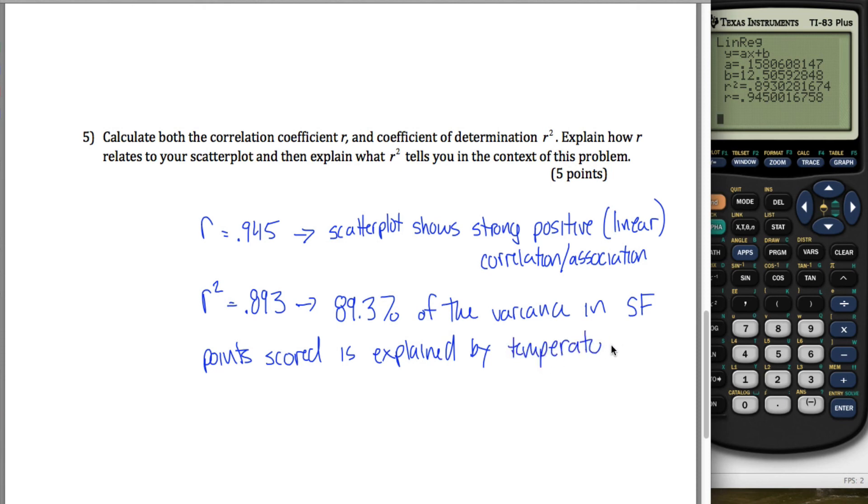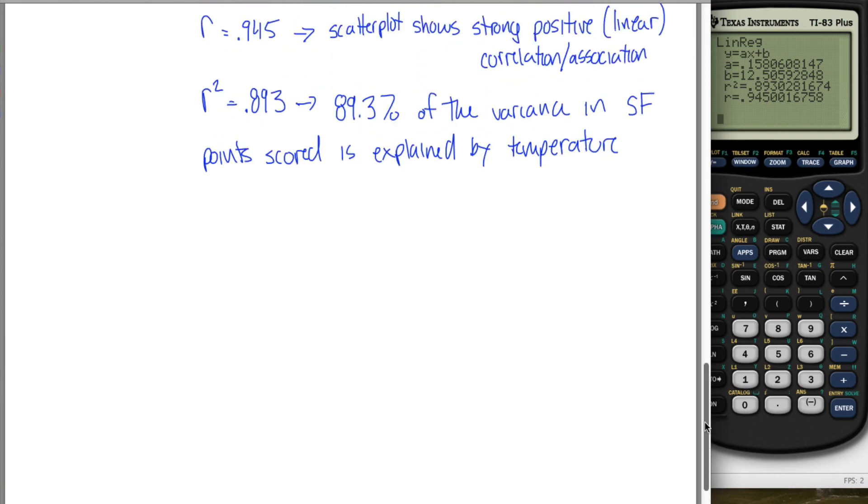There's a lot of different things, a lot of different factors that will determine how many points the 49ers score. But based solely on this data we're looking at, most of it, almost 90% of it, is explained by how cold it is. All right. I guess that's it. So that is the end of this quiz.